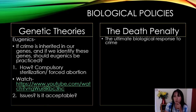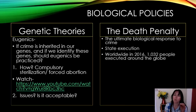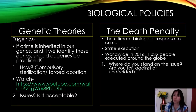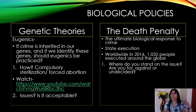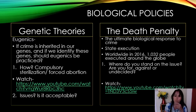On the other side we have the death penalty — the ultimate biological response to crime: state execution. Worldwide in 2016, 1,032 people were executed around the globe. Where do you stand on this issue? Is the death penalty for who, and where do you draw the line — are you for, against, or undecided? If you have state execution you obviously can't reproduce and have more children. Both of these areas are very controversial and also quite distressing.